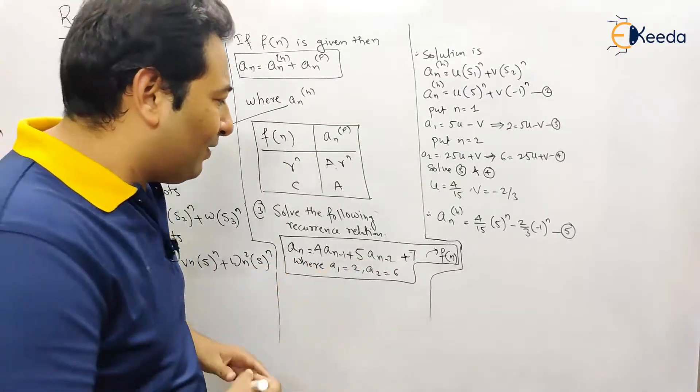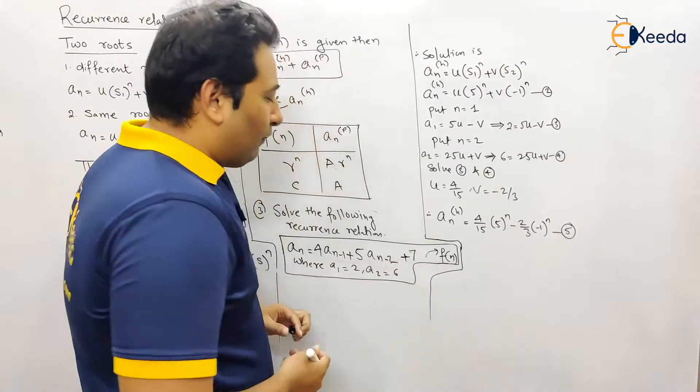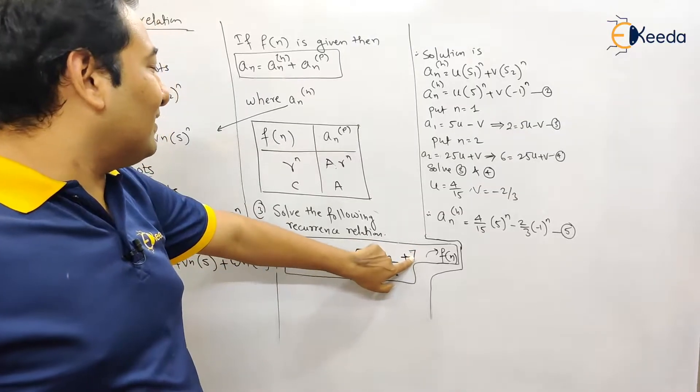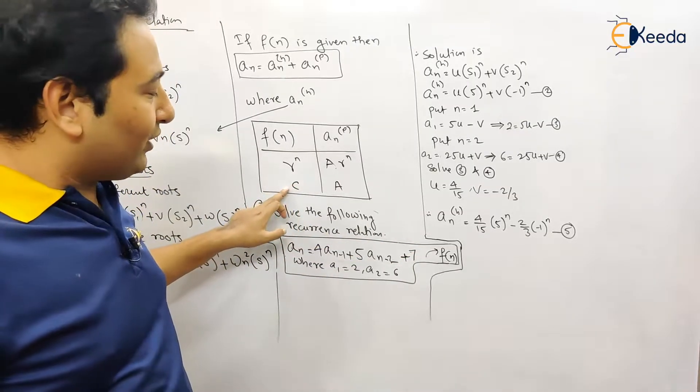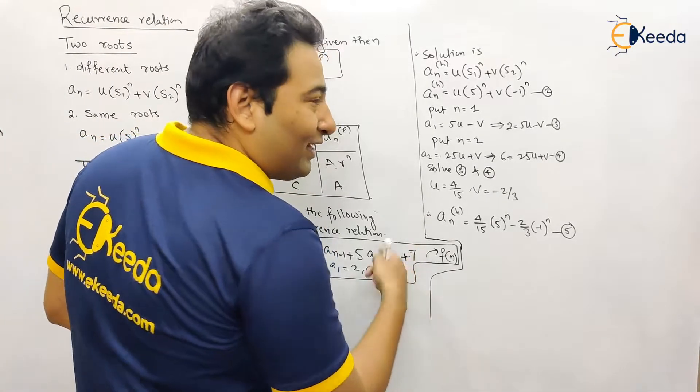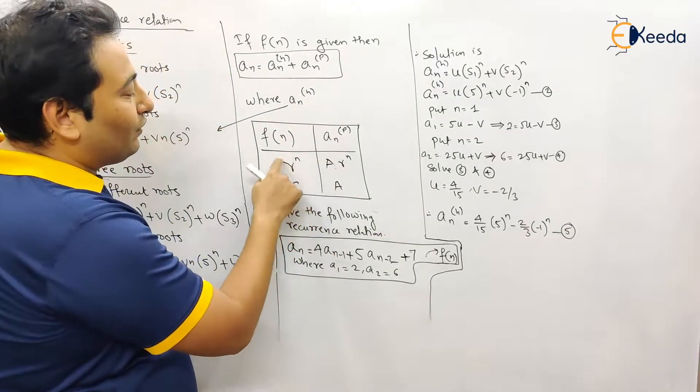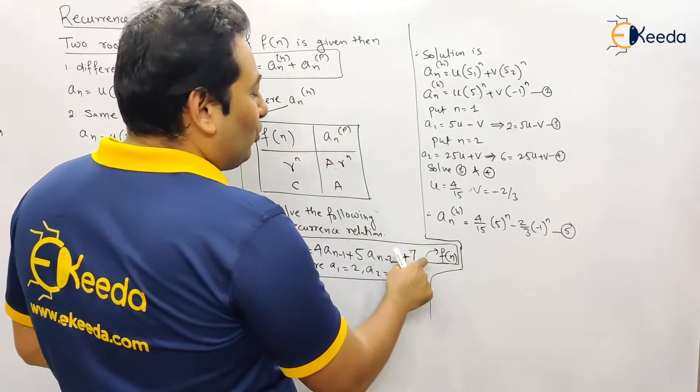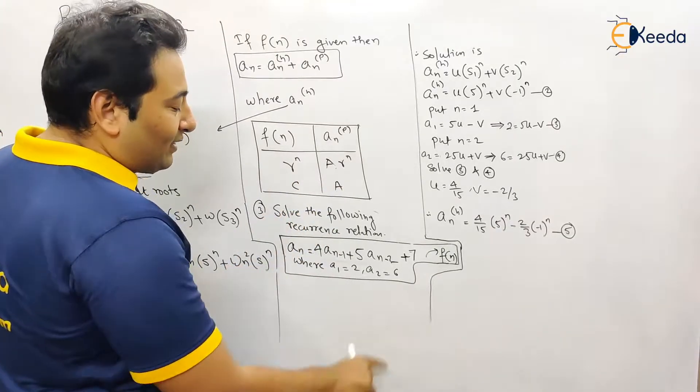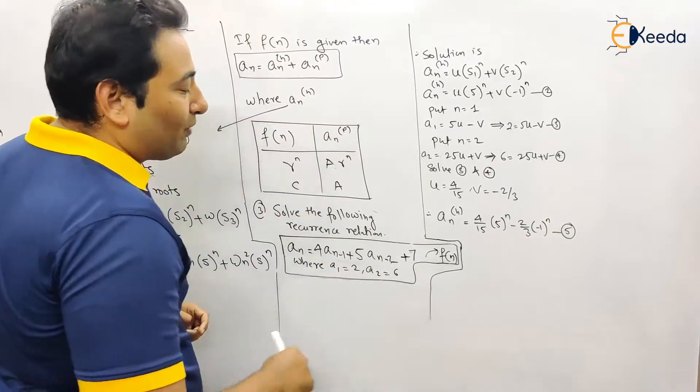The basic problem is the same. Here we have f(n), now f(n) is actually a constant, that is c. In the last problem we took 7-n, which was from that category, but here we took a constant. Initial conditions are also present.